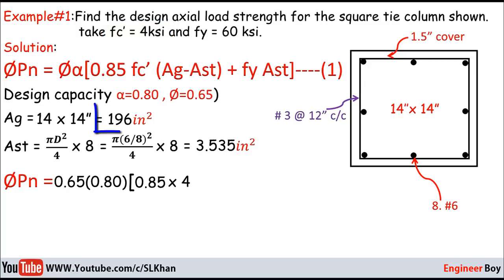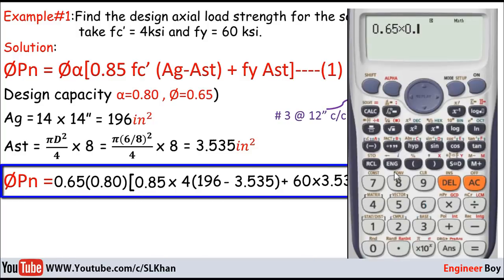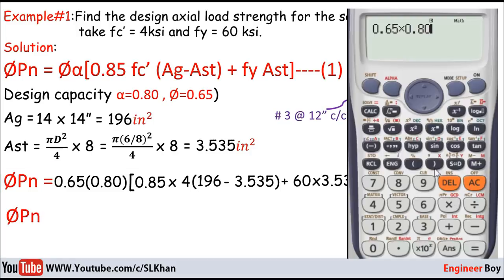Ag is also known, 196. Minus Ast, which is also known, plus fy, which is 60 ksi, times Ast again. If you do the math with your calculator, we'll get ΦPn = 450.57 kips, and that's the answer.